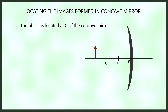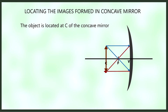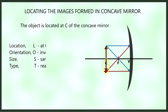When the object is placed at C of the concave mirror, using the PF ray and FP ray, the image is located at C, inverted, the same size as the object, and the type is a real image.